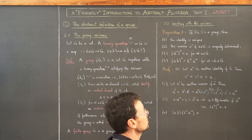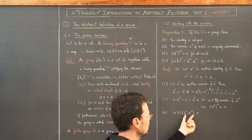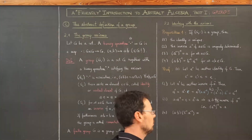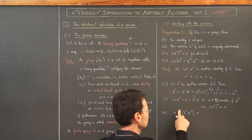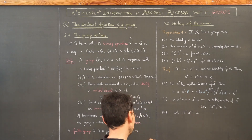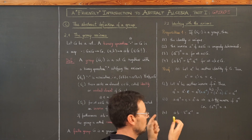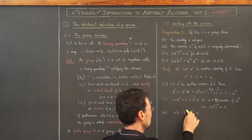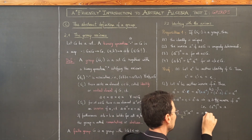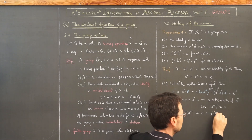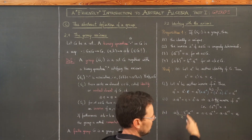For the last part, we write down a·b·b⁻¹·a⁻¹. At first we need parentheses, but because of associativity we can move them however we wish. We can put the parentheses around b·b⁻¹, which gives the identity, so we end up with a·e·a⁻¹, which gives a·a⁻¹, which gives the identity.